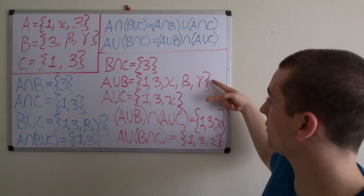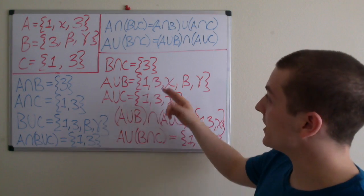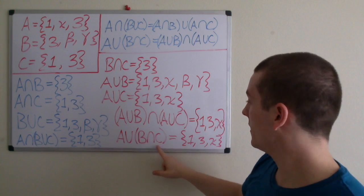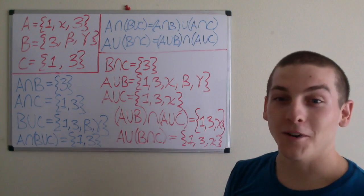So when we take the intersection of these two sets, we're left with the set containing elements 1, 3, and x. And when we take the union of B intersection C with A, we're left with the set containing elements 1, 3, and x, which is exactly what we wanted.